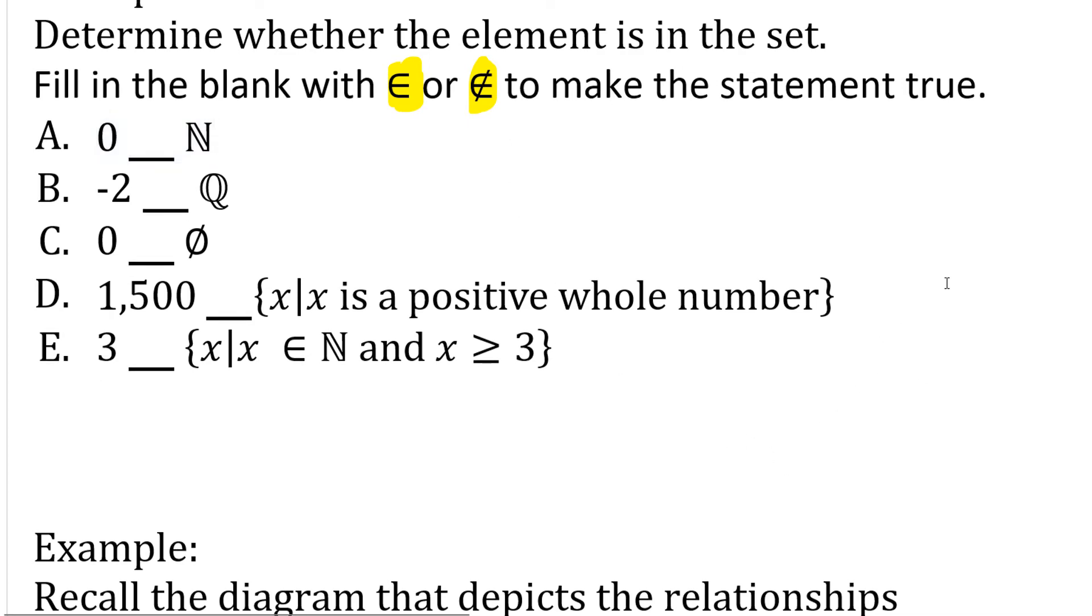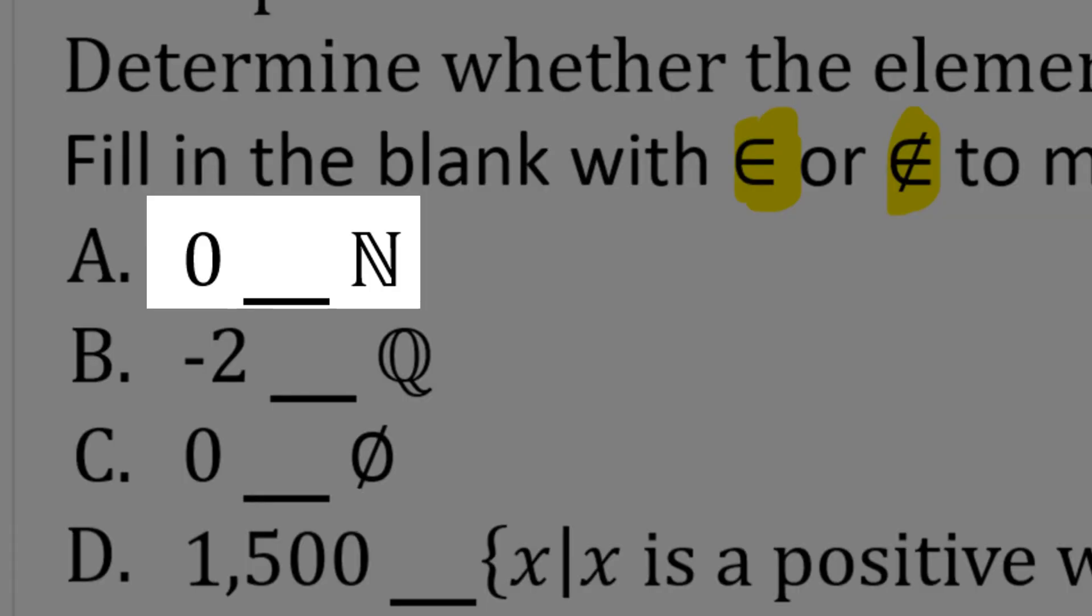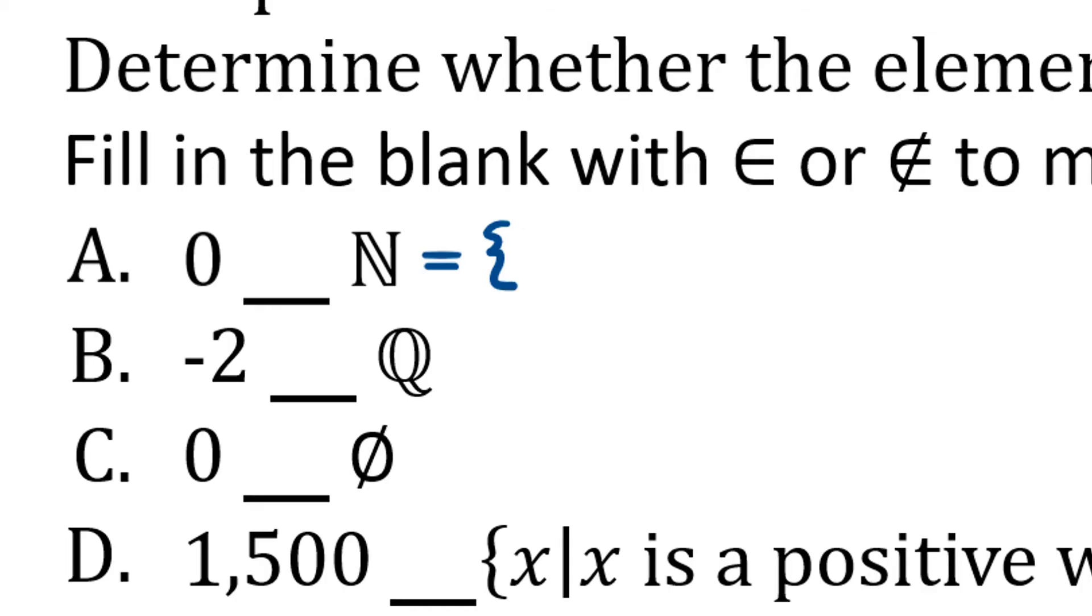All right, so in part A we have 0 blank and then we have this bold N. Right, so do you remember what that bold N stands for? If you said it stands for natural numbers, you are correct. And which set is the natural numbers? Is it the set that starts with 0 or the set that starts with 1? If you said it's a set starting with 1, you are correct. I think that comes from the fact that you can see quantities starting with 1 in nature, but you can't see 0. So in that sense it's not a natural number. 0 is a whole number, but not a natural number. All right, so is 0 an element of the natural numbers? No. So we would write 0 is not an element of the natural numbers.